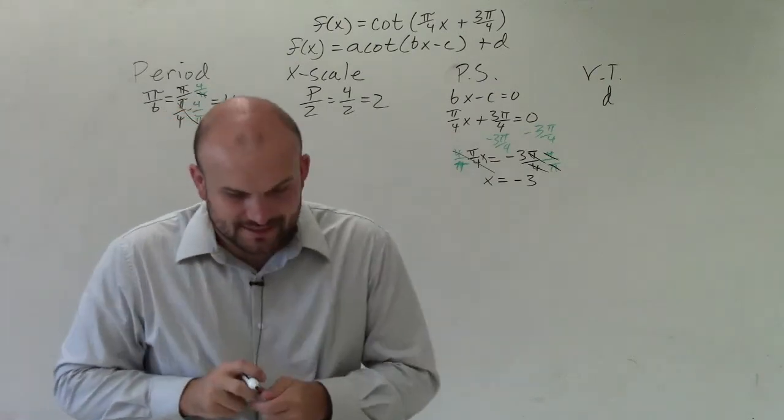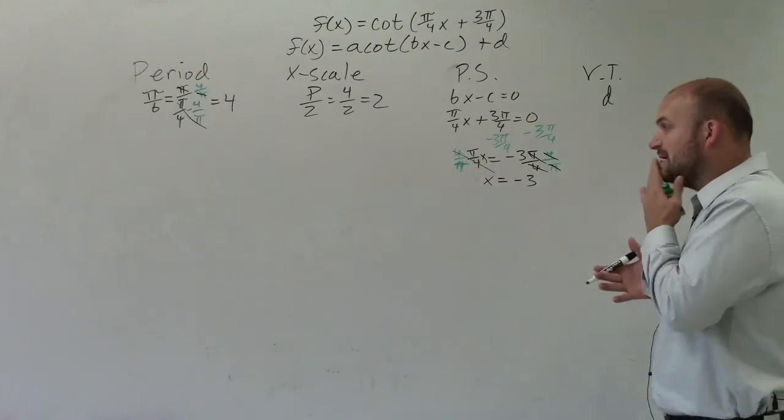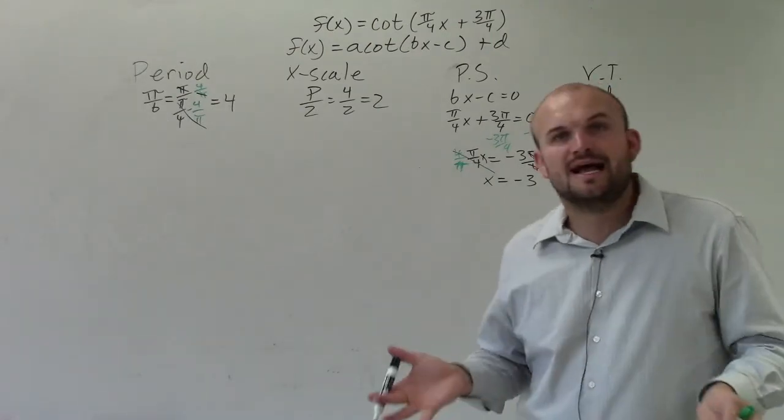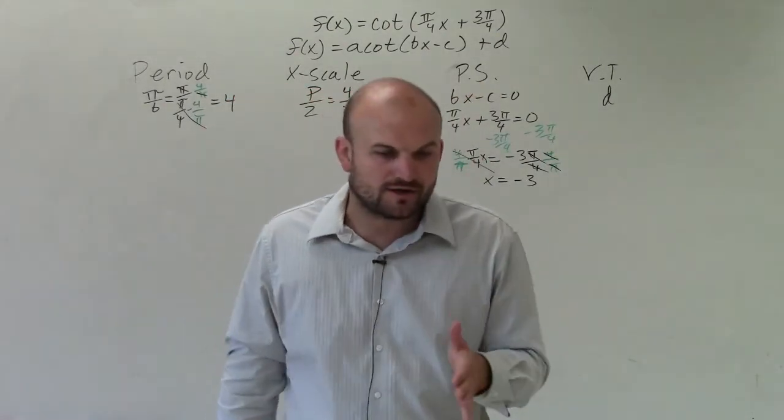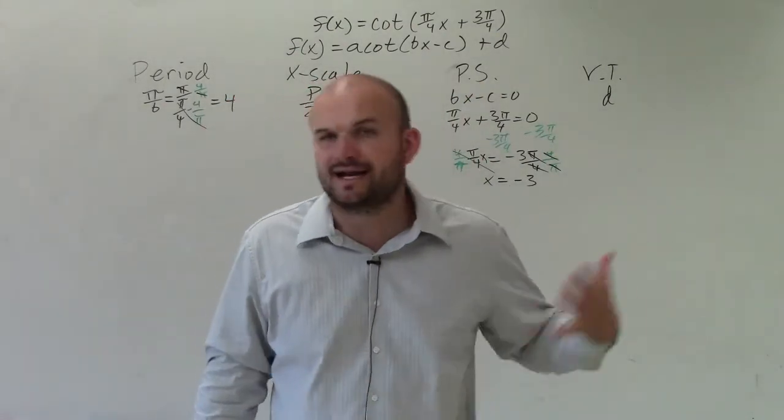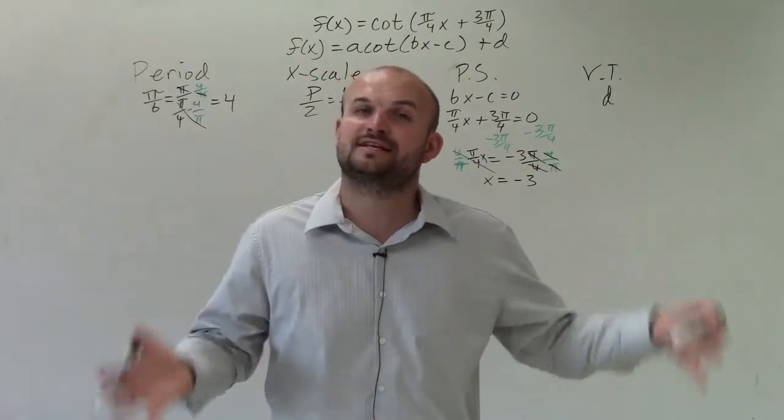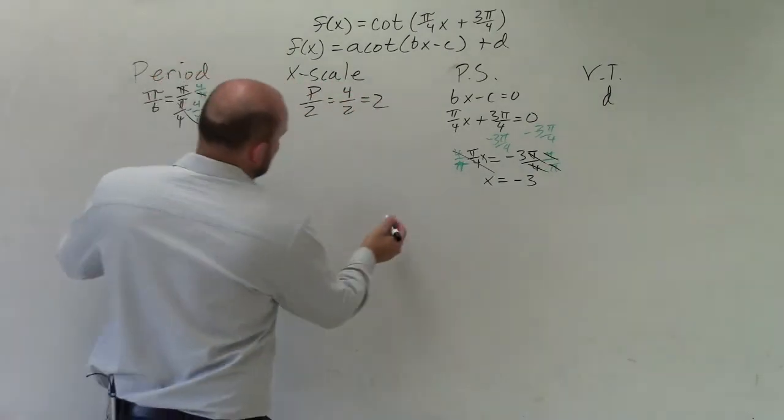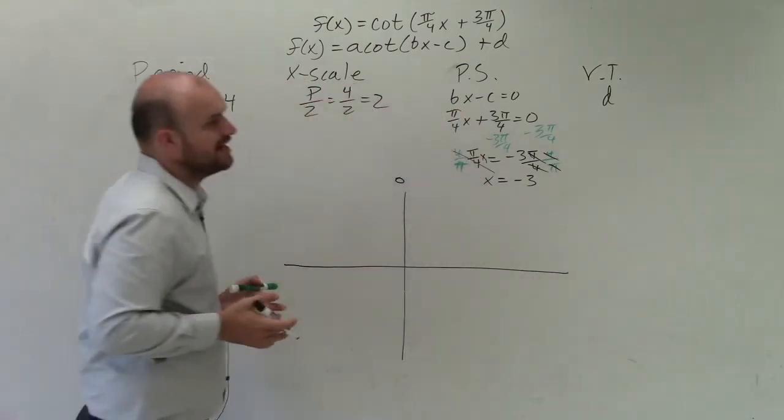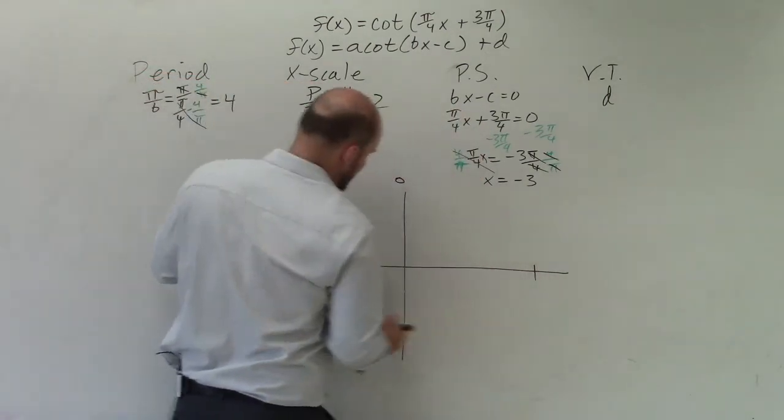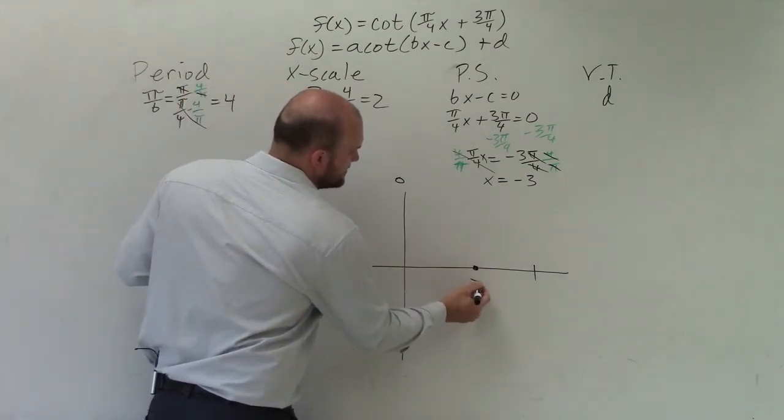When looking at understanding what is this graph going to do, where is this going to be at, let's take a look at what the parent graph looks like, and then how we're going to transform it. Remember, these are harmonic functions, so they're going to continue on forever. But a lot of times, we like to pick where we can take a snapshot. That's what we call the initial period. And the initial period, we like to start at 0.